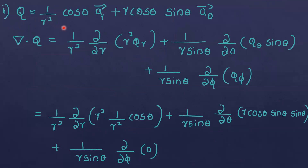Second one: Q is equal to 1 by r squared cosθ ar-vector plus r cosθ sinθ aθ-vector. The divergence in spherical coordinates is: 1 by r squared dou by dou r of r squared Qr plus 1 by r sinθ dou by dou θ of Qθ sinθ plus 1 by r sinθ dou by dou φ of Qφ.